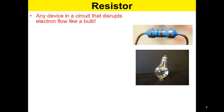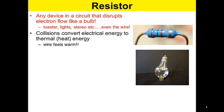Any device in a circuit that disrupts the electron flow like a bulb is a resistor. So toasters, lights, and stereos, even the wire itself could be considered a resistor. Collisions convert electrical energy to thermal energy or heat. The wire feels warm. Resistance is measured in ohms with an ohm meter.